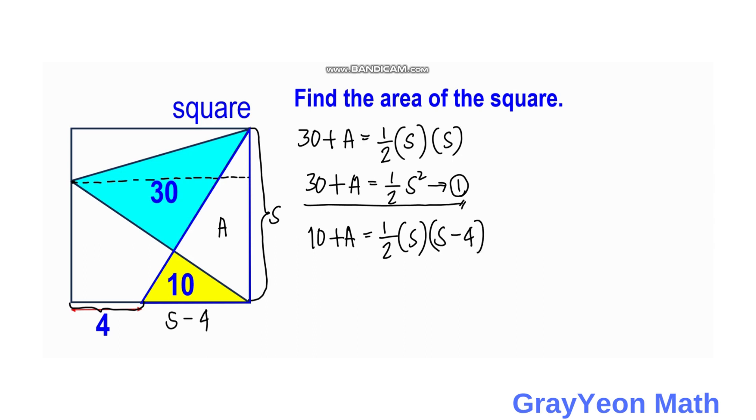Simplifying this, we have 10 + A = 1/2 × S × (S - 4) = 1/2 S² - 2S. This is our equation 2.